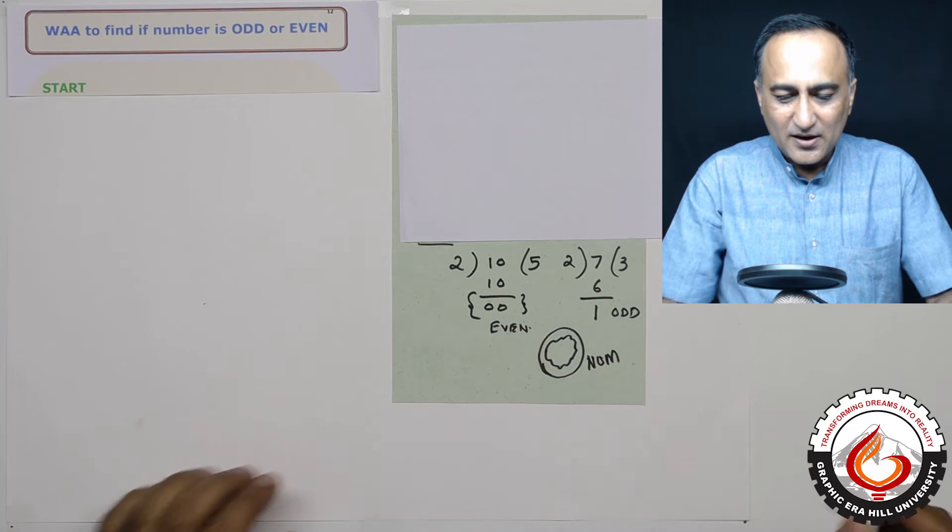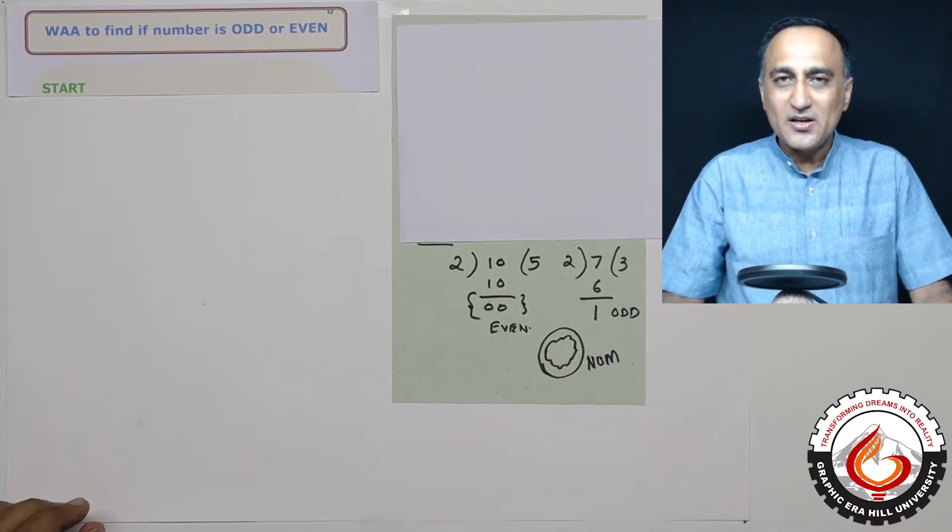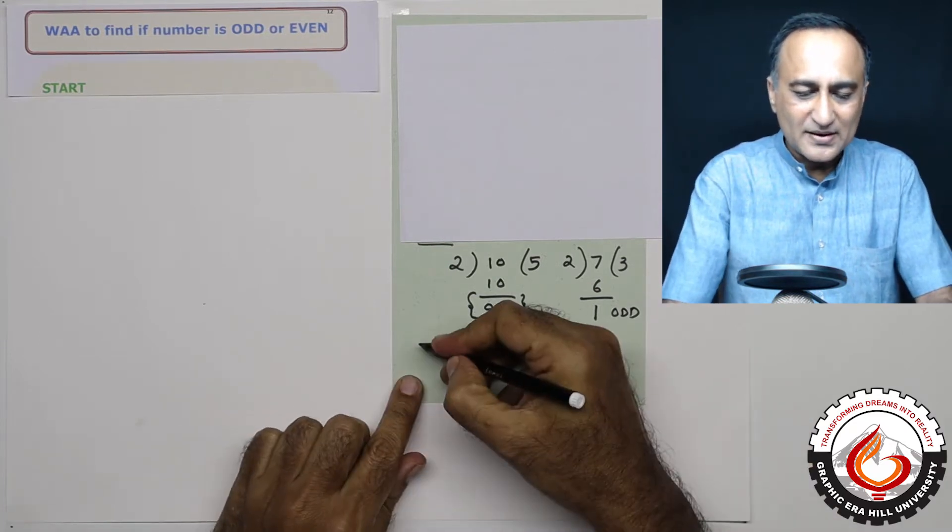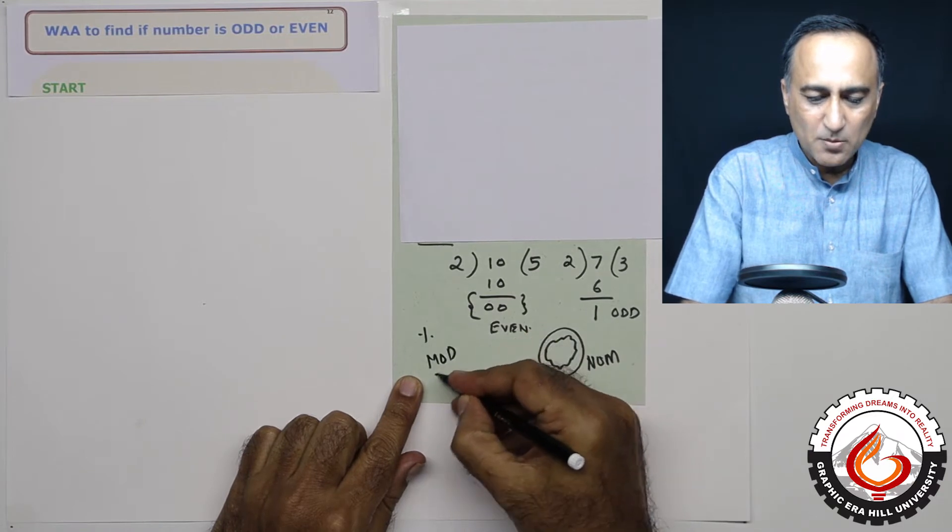So first thing, in order to determine if a number is odd or even, we can use something called the mod operator. Mod operator is given by the percentage sign in C or you can use this mod word.